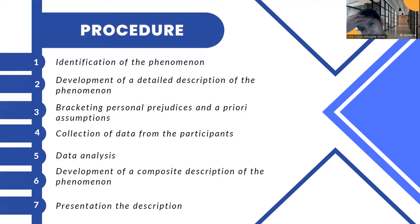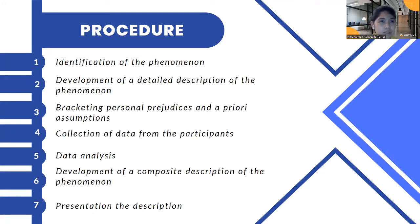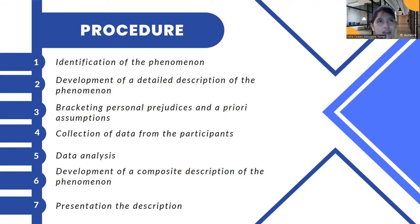Here is a sample procedure on how to conduct phenomenological research. Keep in mind that this is not set in stone — it is just an example, as researchers are free to adapt it. The first step is the identification of the phenomenon — as a researcher you identify what subject you want to research about. The second step is the development of a detailed description of the phenomenon, where you establish your research and prepare your interview questions about what you really want to know.